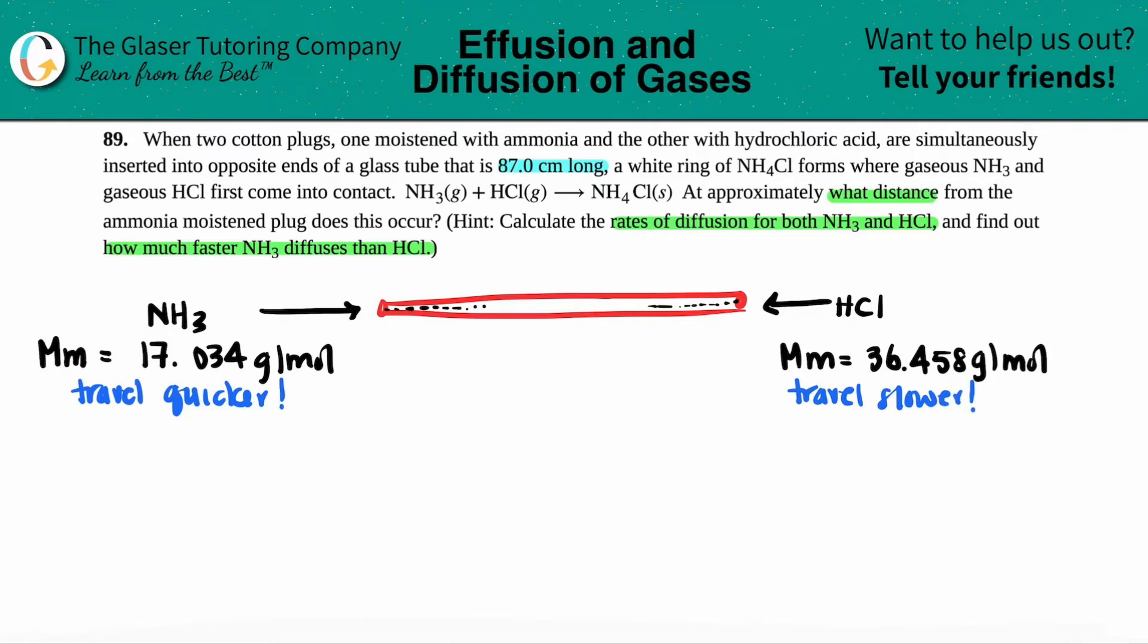If the whole glass tube was 87.0 centimeters long, at what point will NH3 come in contact with HCl? If they come in contact right smack in the middle, that means they weighed the same and traveled at the same rate. But if NH3 travels quicker, that means NH3 is going to travel a farther distance because it's traveling at a higher speed.